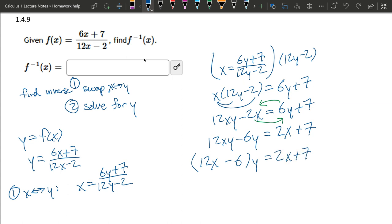We are almost there. How do you solve for y? Get rid of y's last friend, which is 12x minus 6. So you're dividing by 12x minus 6. And once you have y by itself, you've accomplished step two. You've solved for y.